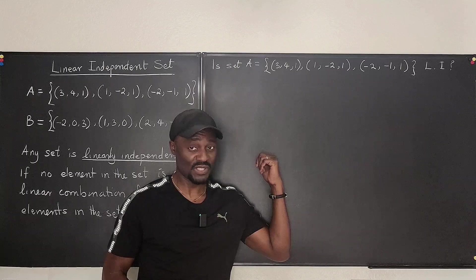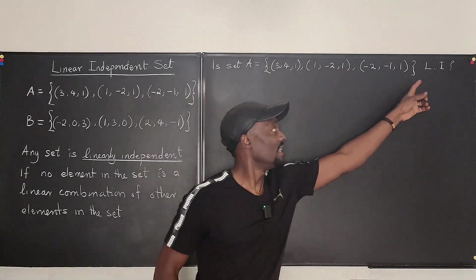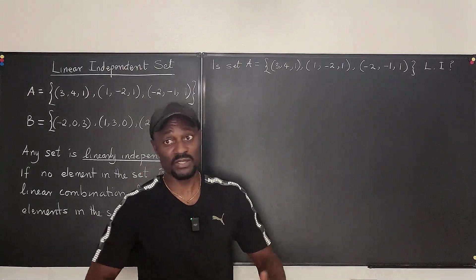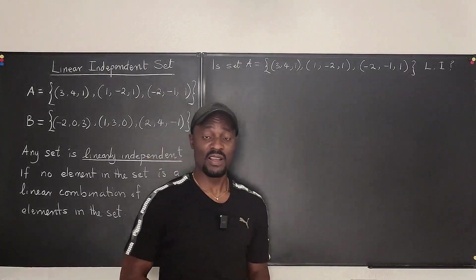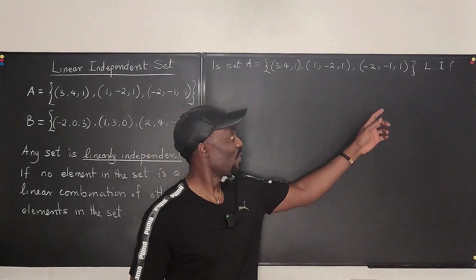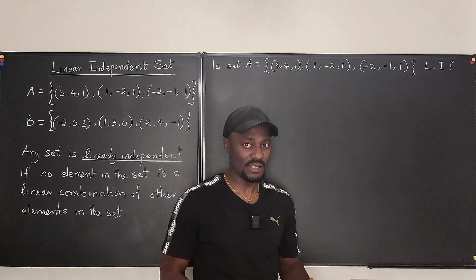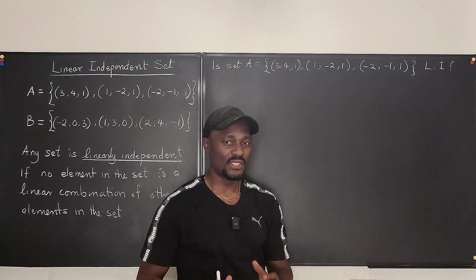So this is how we write the question. We say, is this set linearly independent? Li. Because linearly independent is quite a long expression. So we can say Li. Is it? How do you know? This is how you start.